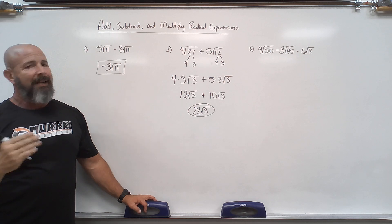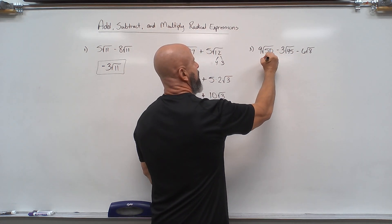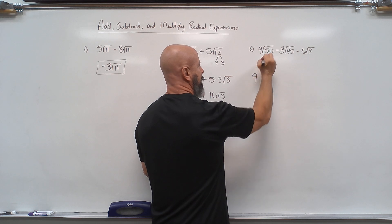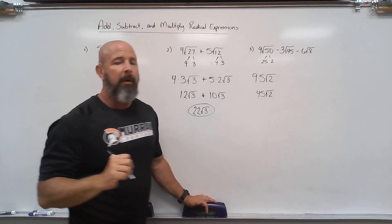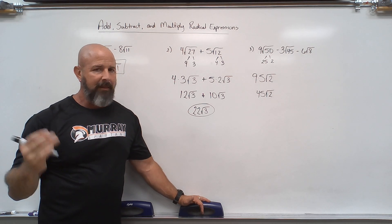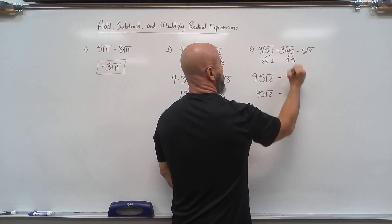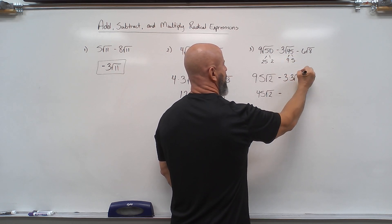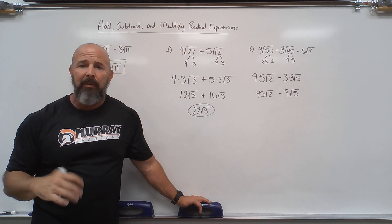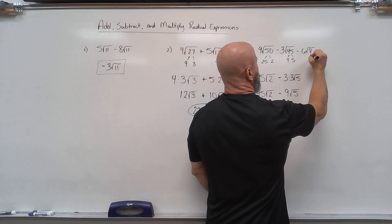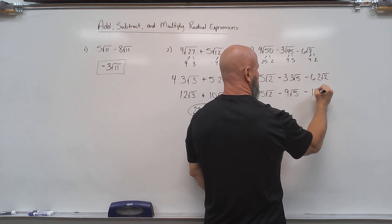I look at each one individually and do some simplifying — that's the more difficult, time-consuming part. 50 is 25 times 2, and root 25 is 5 with the 2 still inside, so that's 45 root 2. Then 45 is 9 times 5; the square root of 9 is 3 with the 5 still in, giving minus 9 root 5. And root 8 is 4 times 2; root 4 is 2 with a 2 inside, so that's minus 12 root 2.